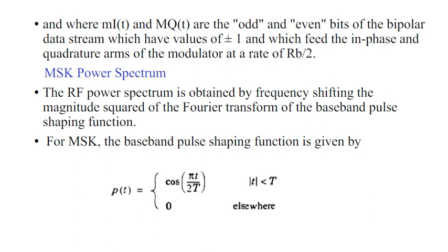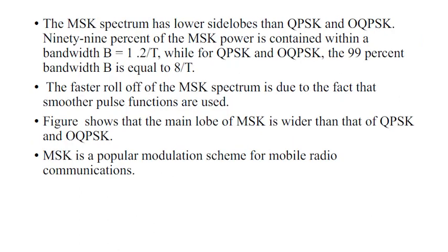The radio frequency power spectrum is obtained by frequency shifting the magnitude squared of the Fourier transform of the baseband pulse shaping function. For MSK, the baseband pulse shaping function is given below. The MSK spectrum has lower sidelobes than QPSK and offset QPSK. 99% of the MSK power is contained within a bandwidth B equal to 1.2/T, while for QPSK and offset QPSK the 99% bandwidth B is equal to 8/T.